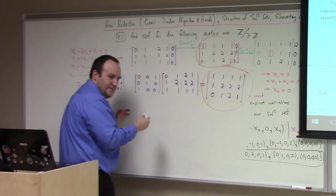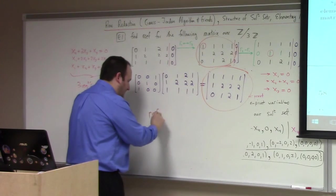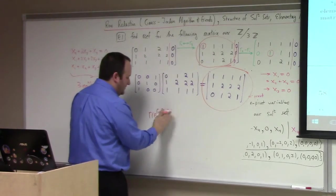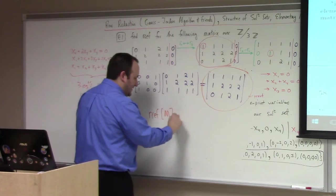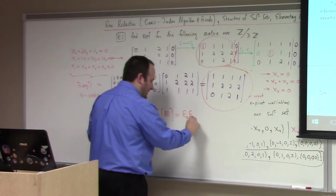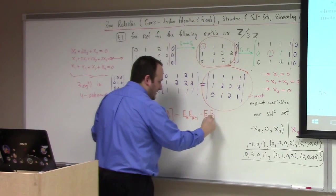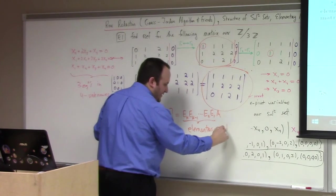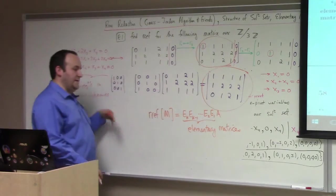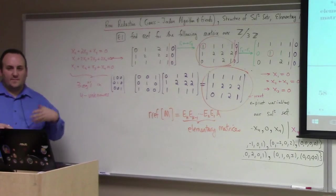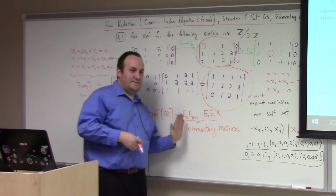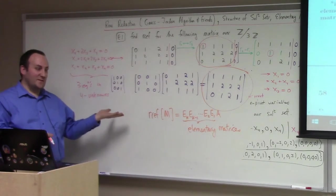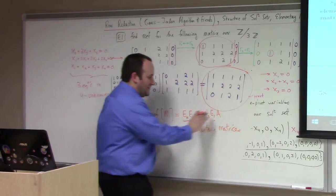The ultimate point: the reduced row echelon form of a matrix is going to be E_K times E_{K-1} times ... times E_2 times E_1 times A, where these are all elementary matrices. The Gauss-Jordan elimination can be accomplished by successive left multiplication of elementary matrices — you need as many of them as you have row operations. That gives us a formula for the reduced row echelon form as related to the original matrix.